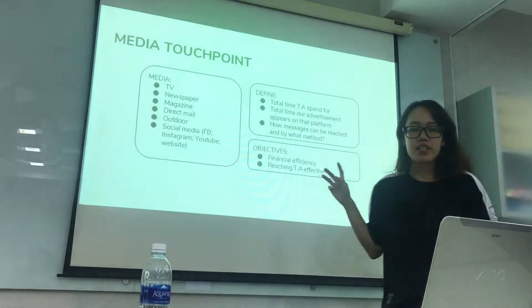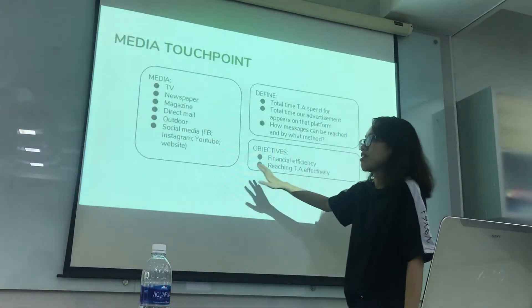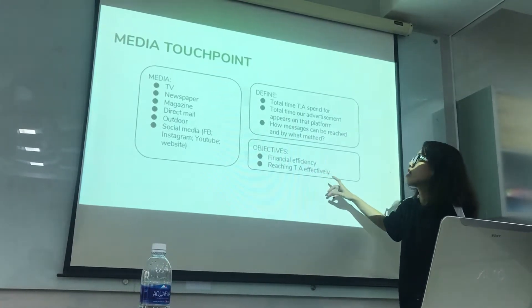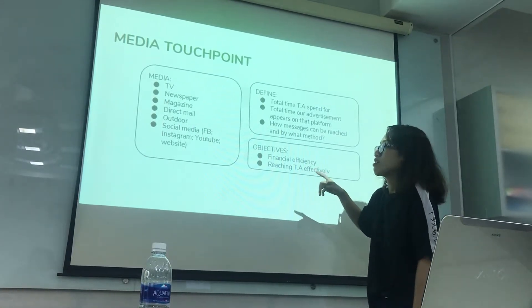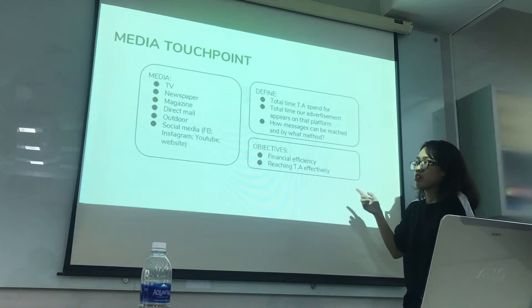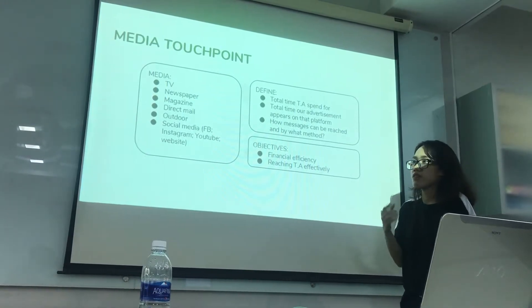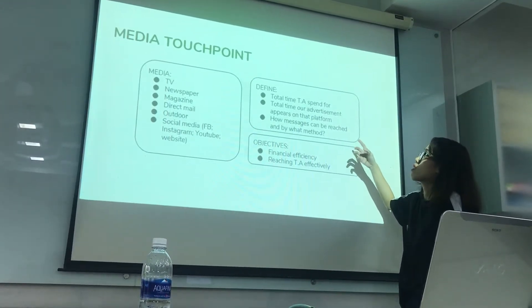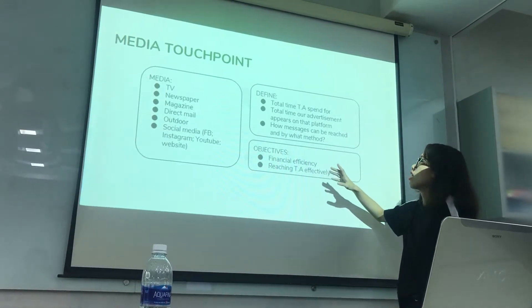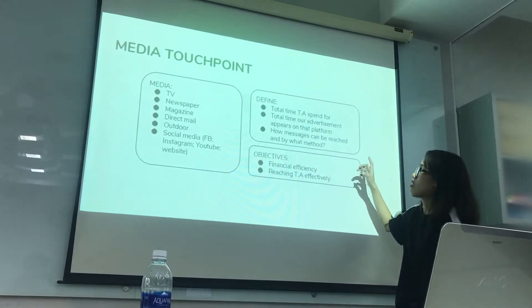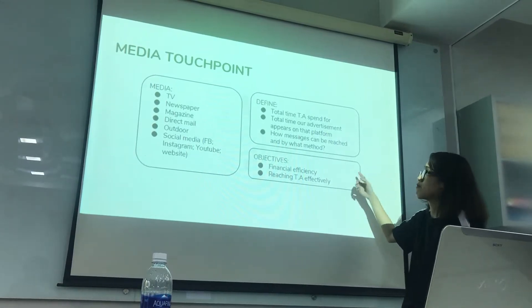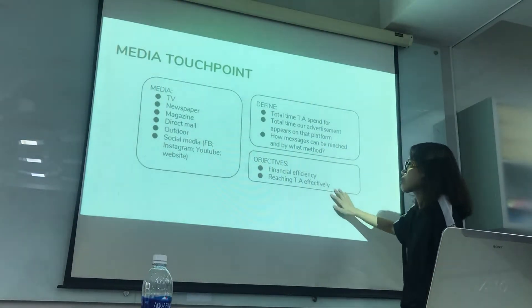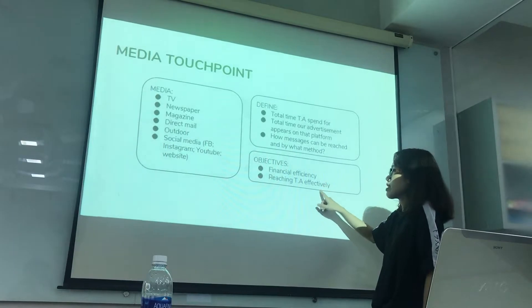The next M is media touchpoint. There are many kinds of media like TV, newspaper, magazine, direct mail, and so on. Each media will have a different effect on each target audience, so we need to find how much time our target audience spends on that media, the total time our advertisement should appear on that platform, how much it can reach, and by what method. The objective of this M is financial efficiency and reaching our target audience effectively, so we can make sure everyone can know about our message or idea.